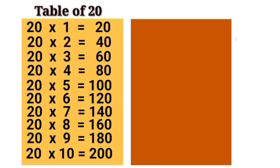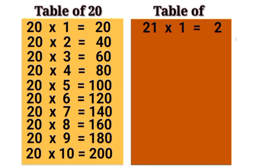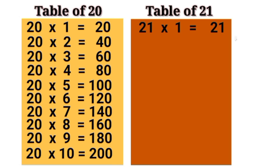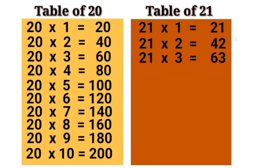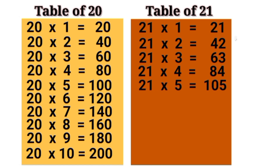21 1 is 21, 21 2 is 42, 21 3 is 63, 21 4 is 84, 21 5 is 105.